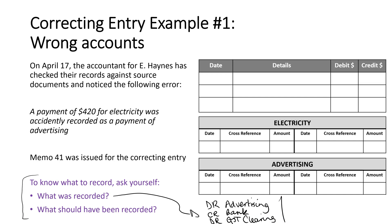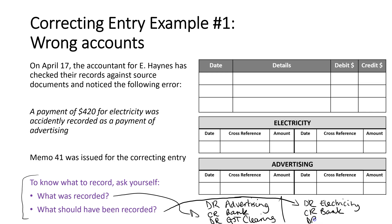The second question is: what should have been recorded? Well, we should have recorded a payment of four hundred and twenty dollars for electricity. So if we think about that, we would have debited electricity, credited bank, and we probably would have debited GST clearing.